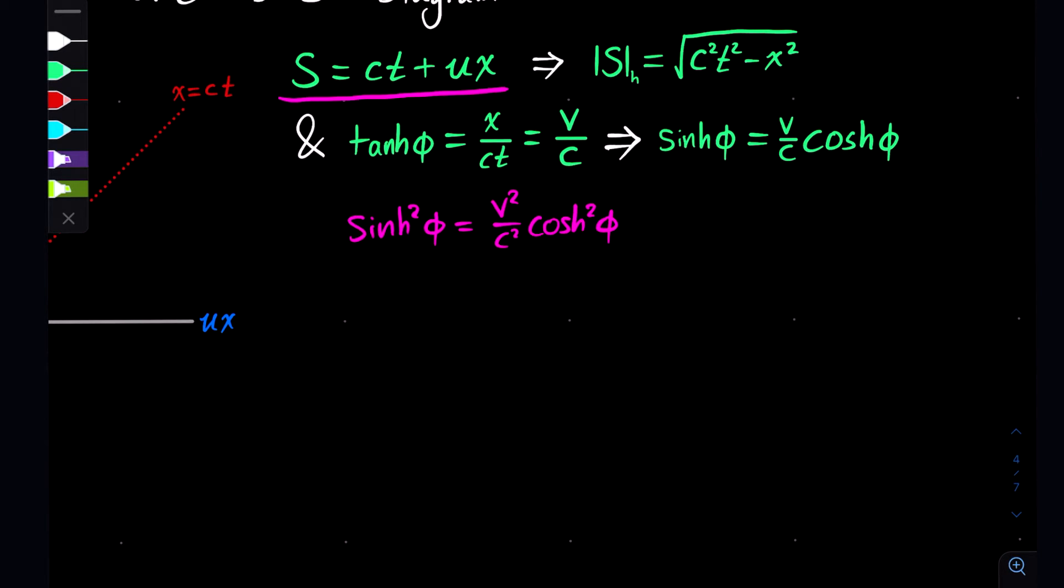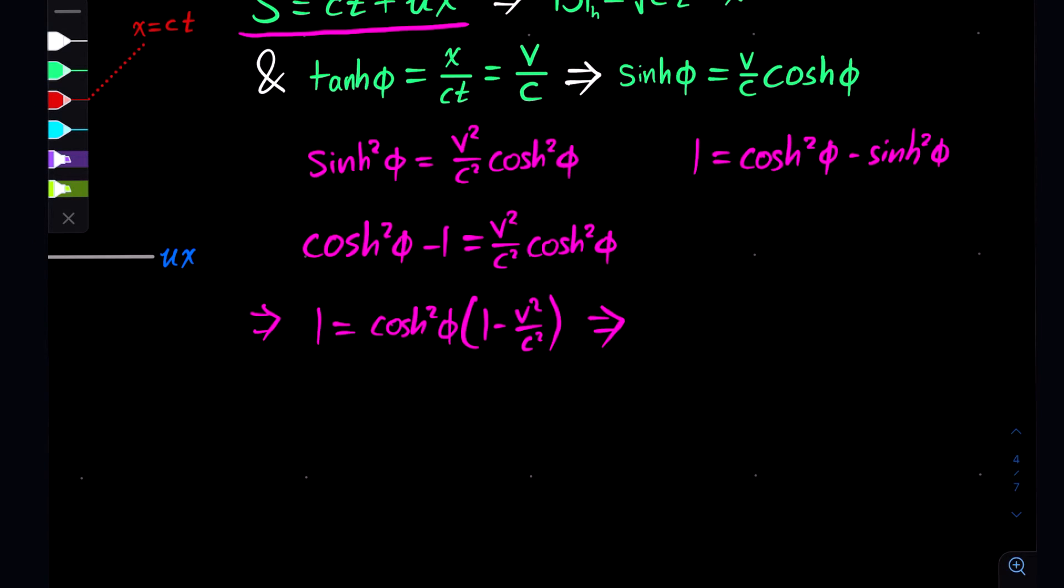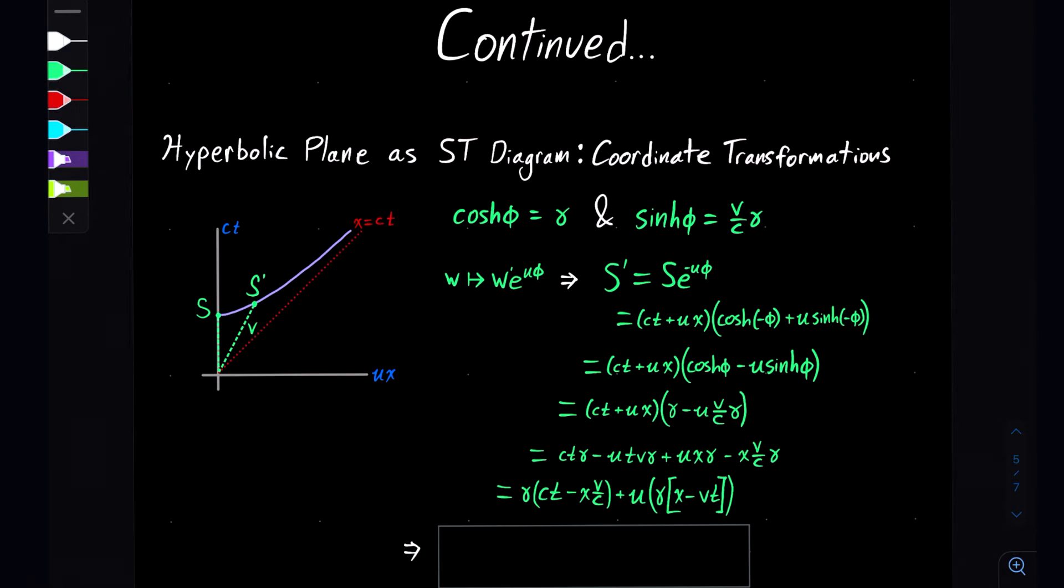If you square both sides, then you get this relationship. Also, remember from the definition of the unit hyperbola, in analogy to the complex numbers, we have 1 = cosh²(φ) - sinh²(φ). This allows us to move everything around such that we have cosh²(φ) - 1 equal to all this. This implies then you can see cosh(φ) is equal to 1 over the square root of 1 - v²/c², which you will recognize as the gamma factor or the Lorentzian factor from special relativity. Using this fact, we can also derive that sinh(φ) = v/c times gamma.